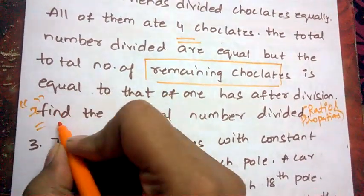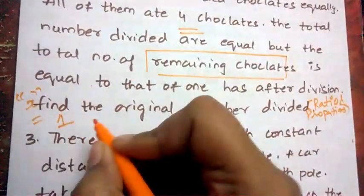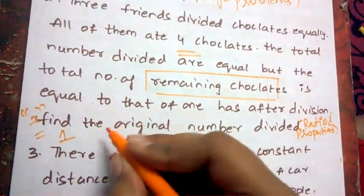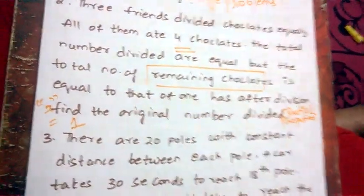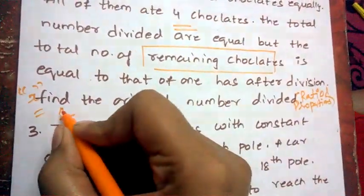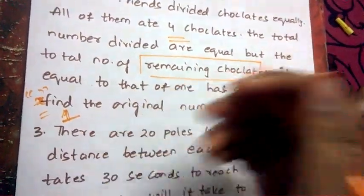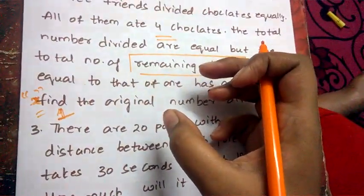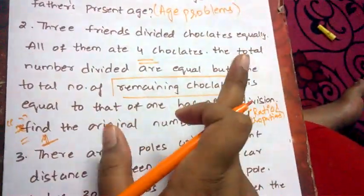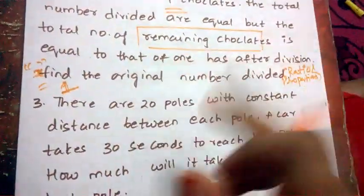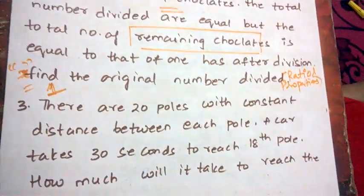So let there be three friends. One of the friends has x chocolates remaining with him — meaning the remaining chocolates equal the ratio of chocolates that one friend has after division. The question asks: what is the original number of chocolates divided?